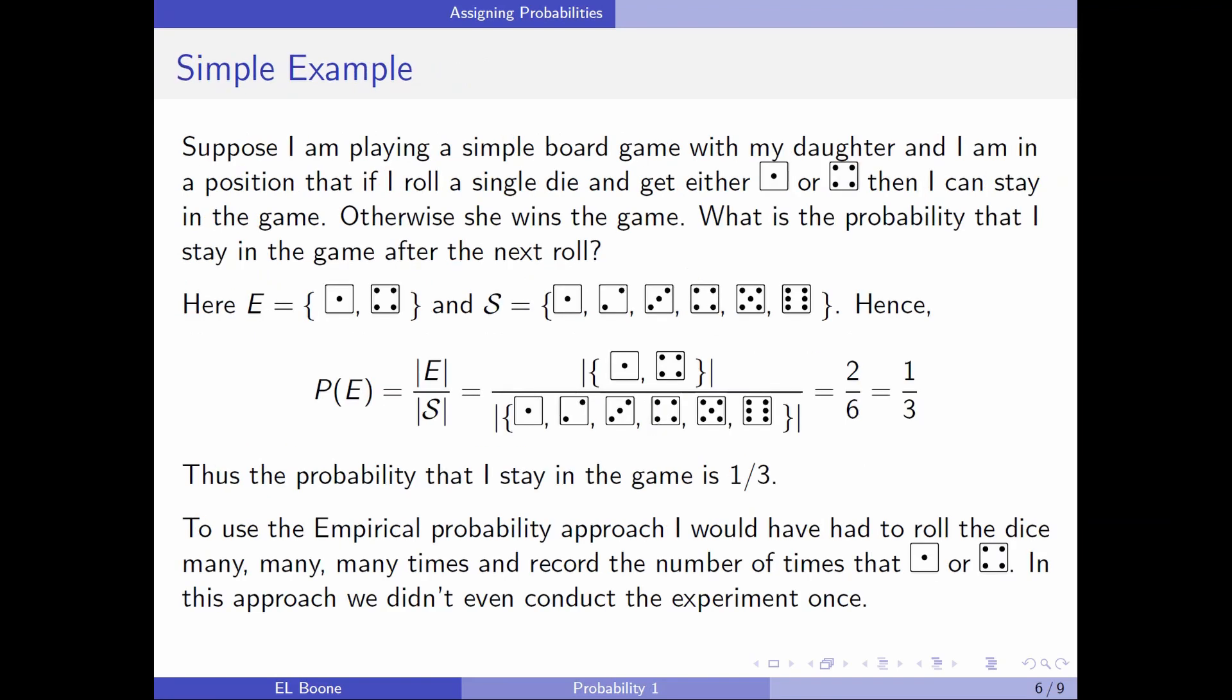Let's go back to our simple example. Suppose I'm playing a simple board game with my daughter, and I am in the position of if I roll a single dice and get either a one or a four, then I can stay in the game. Otherwise, she wins the game. What is the probability that I stay in the game after the next roll? Well, what does it mean to stay in the game? I would roll a one or a four. How many options do I have for this? This has two in it. Here, if I look at this, there are only six possibilities of what can occur. So, if I look at the probability of E, which is I stay in the game, which also corresponds to rolling these two faces, it was the probability of E over the number of outcomes in E over the number of outcomes in S. If we look, here's our outcomes. Here's our outcomes. You see that there's two up here, six down here. So, it's one-third. Thus, the probability that I stay in the game is one-third.